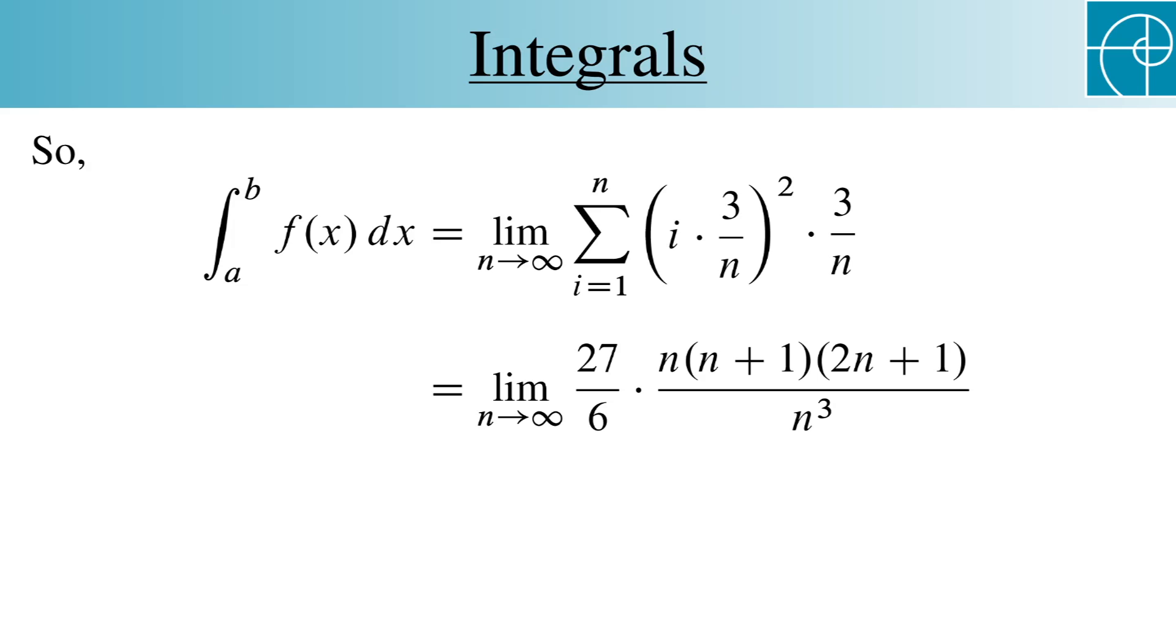Ignore the 27 over 6 for a moment. The rest is a ratio of two polynomials of degree 3. So the limit as n goes to infinity is just the ratio of the leading coefficients. That means that the limit is 27 over 6 times 2 over 1, which simplifies to 9.